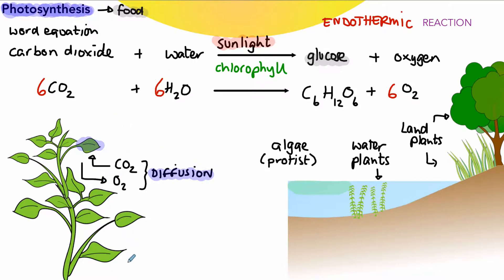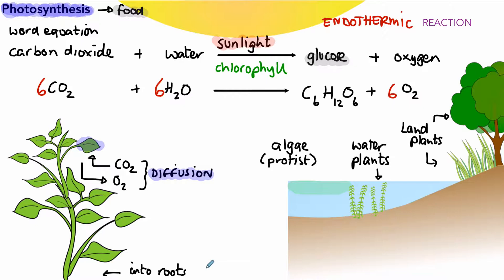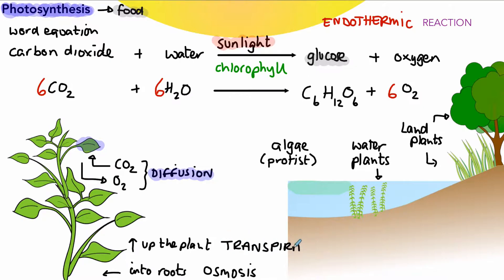Water is also required and comes in from the soil, absorbed through the roots. The process by which water gets into the roots is osmosis. But we also need to get water up the plant, and the way water moves up the plant is by another process called transpiration. So transpiration moves water up the plant, and osmosis moves it from the soil into the roots.